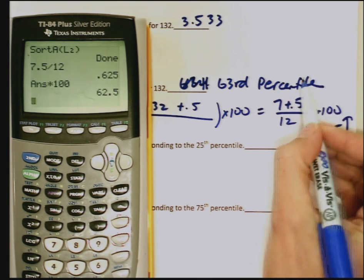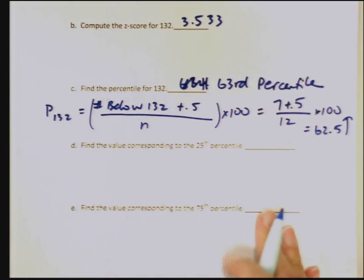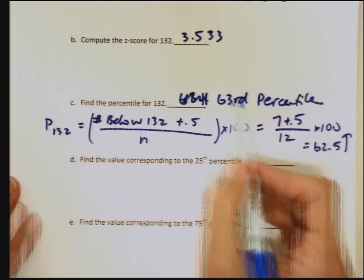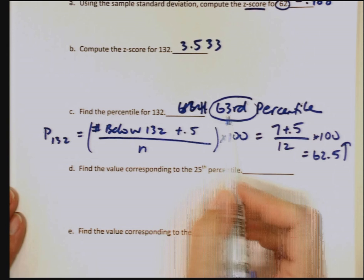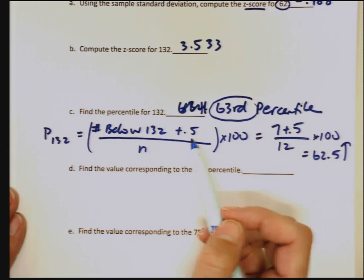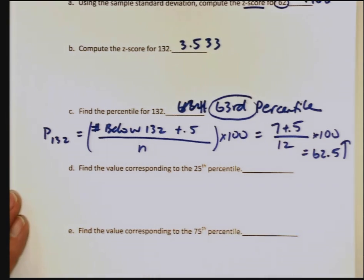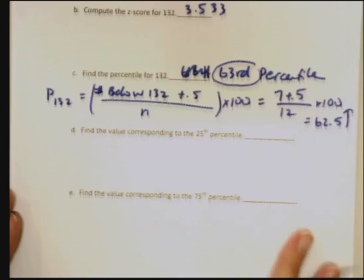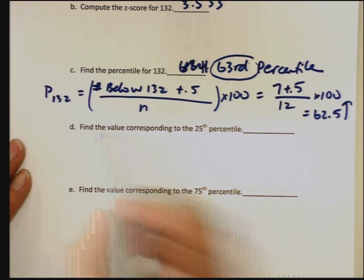Remember how 132 was pretty far along the scale when we were looking at those z-scores? Well, I also know now that 63% of the scores are either at or below 132. It's really common on standardized tests. They'll give you a score back of like an 82, and you know that you scored better than or the same as 82% of the other people taking the tests.